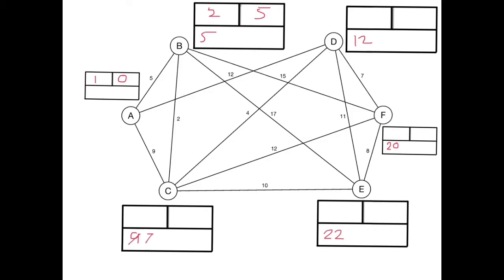Looking at now the temporary label vertices C, D, E and F. C has the lowest with 7 so this is the third node to be made permanent and 7 is its permanent label.